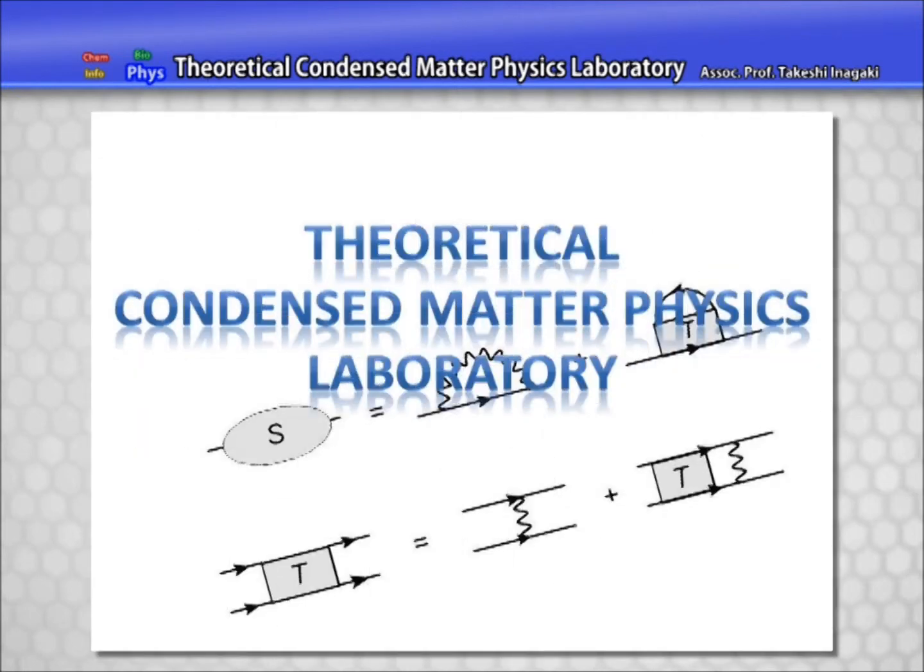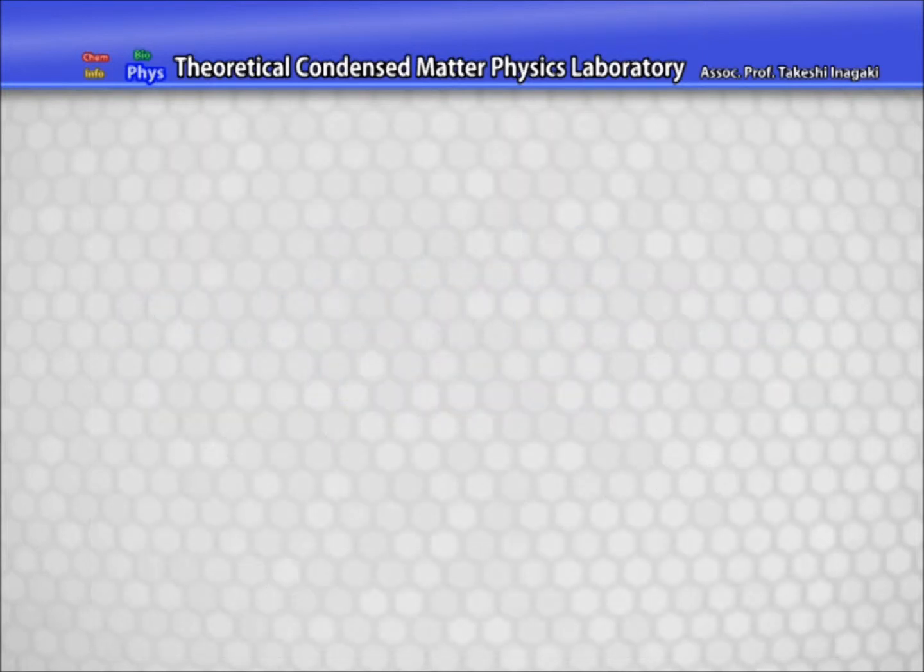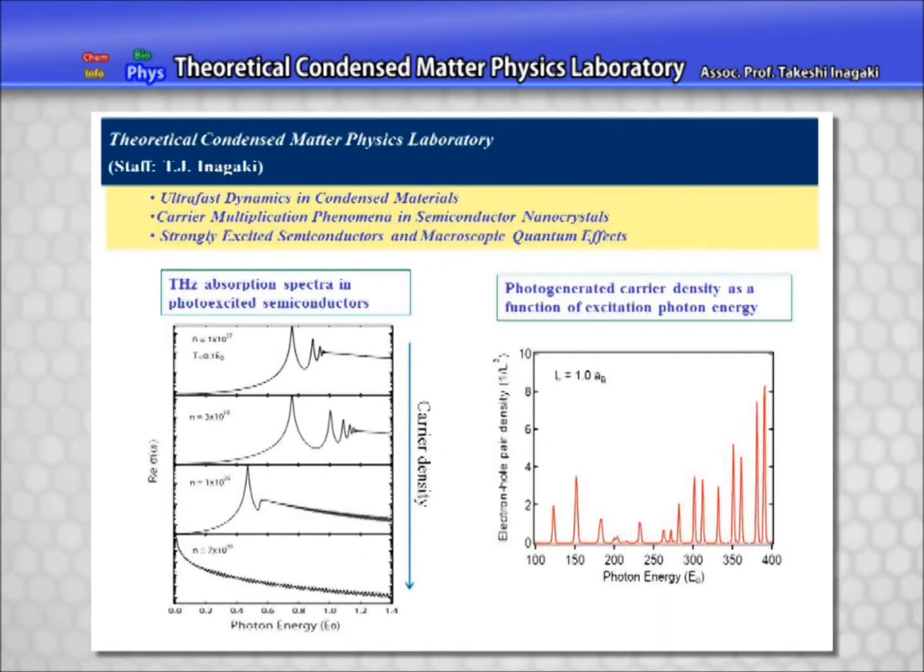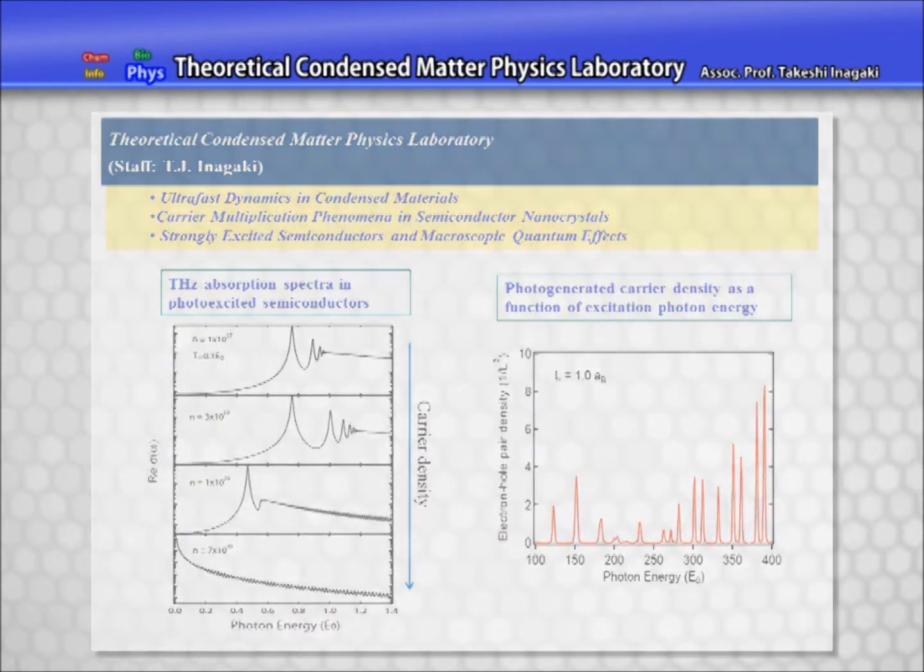The aim of the Theoretical Condensed Matter Physics Laboratory is to theoretically clarify the optical properties of condensed matter. Our current research interests are classified into two groups.